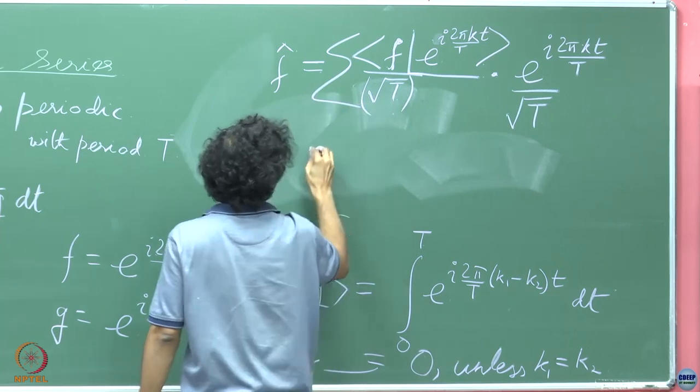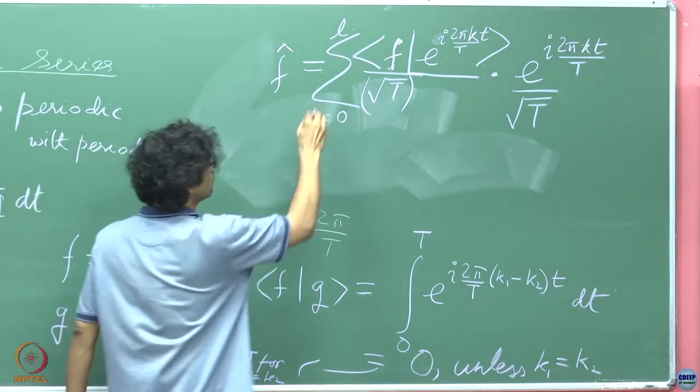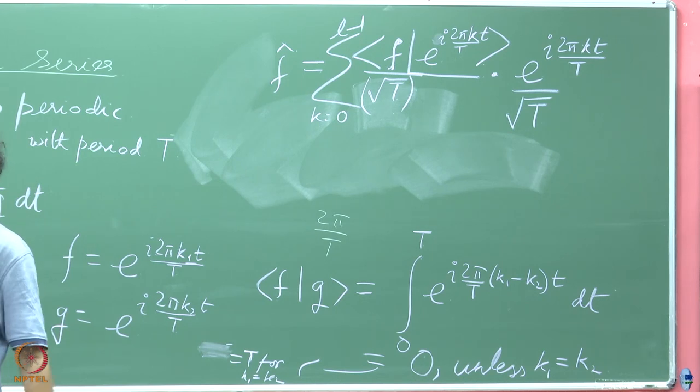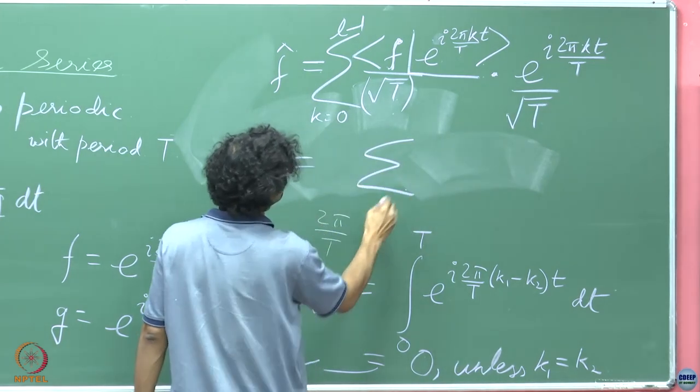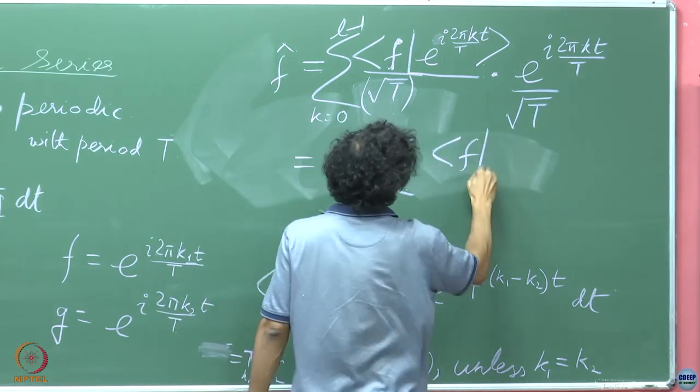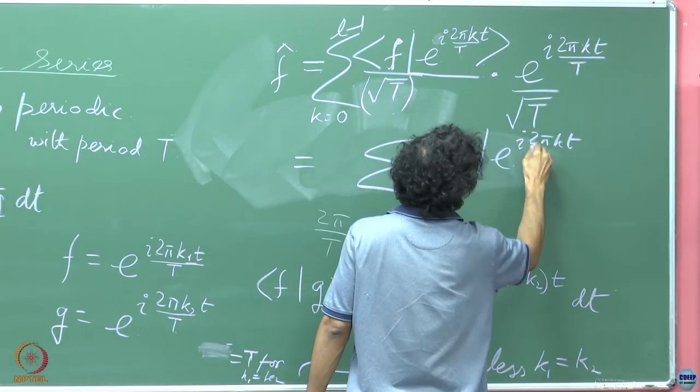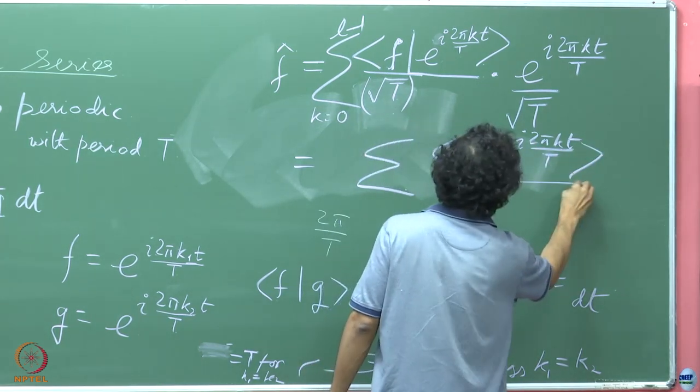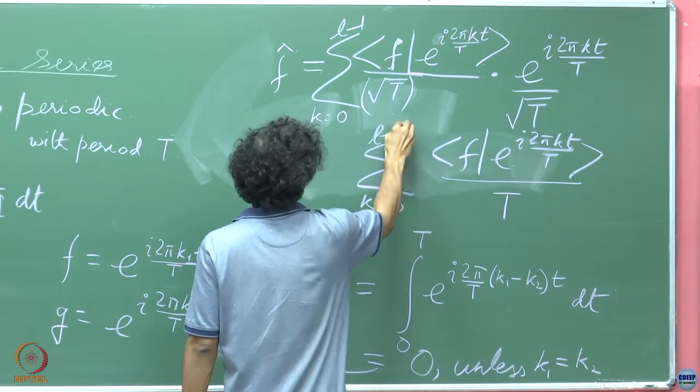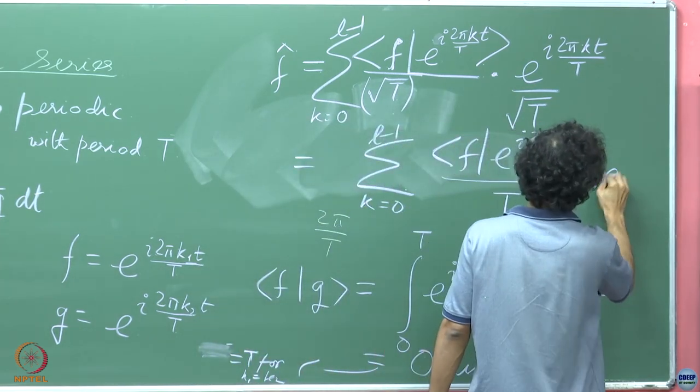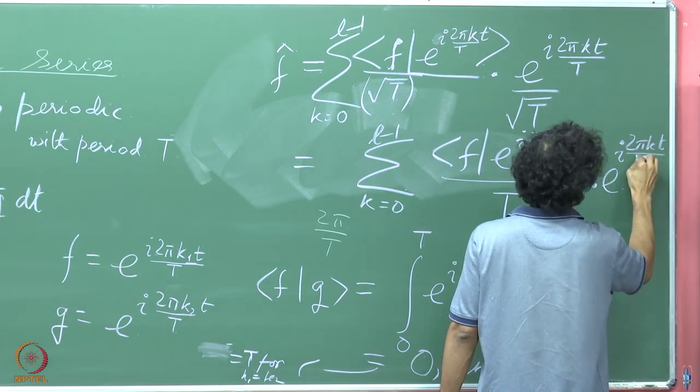So in a nutshell, this is nothing but the inner product of f with e to the i 2π kt upon capital T divided by T, k going from 0 to l minus 1, times e to the i 2π kt upon capital T.